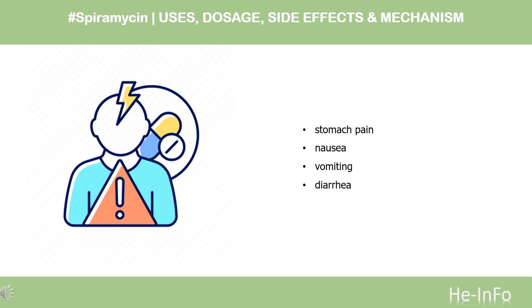Side effects. Common side effects of spiromycin include stomach pain, nausea, vomiting, and diarrhea. Most of these side effects do not require medical attention and gradually resolve over time. However, if the side effects persist or worsen, please consult your doctor.